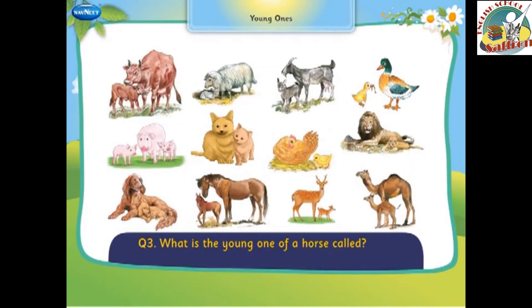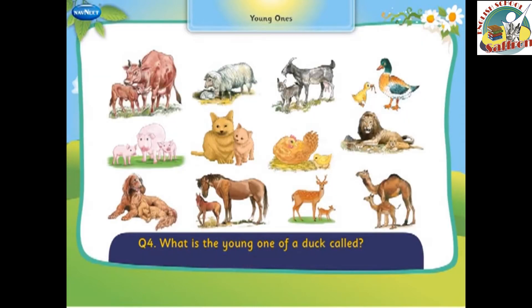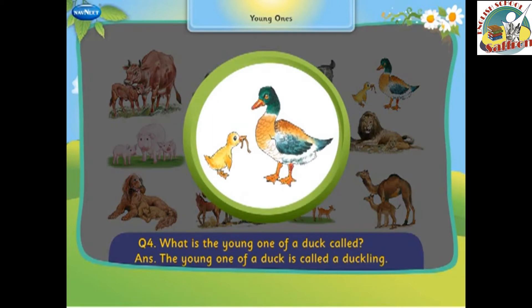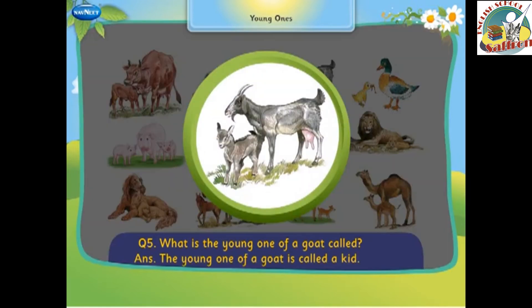What is the young one of a horse called? The young one of a horse is called a foal. The young one of a duck is called a duckling.